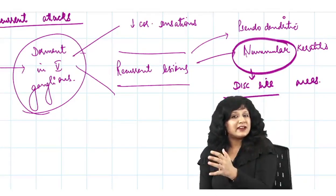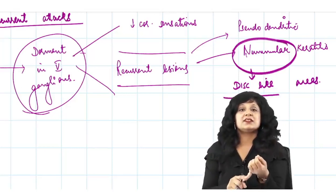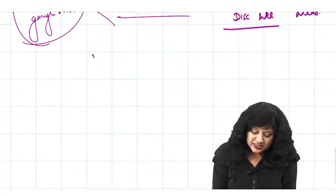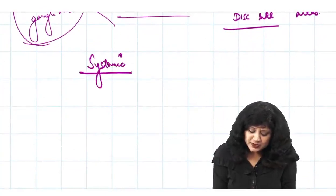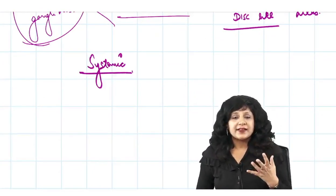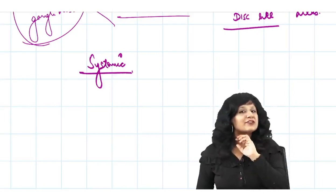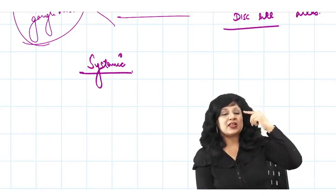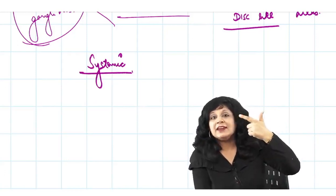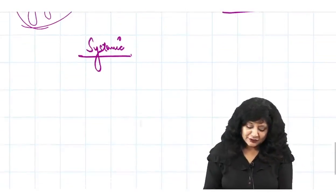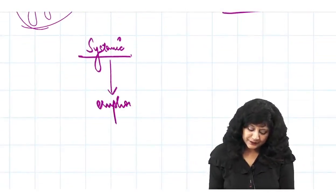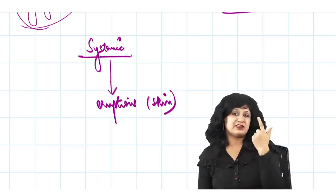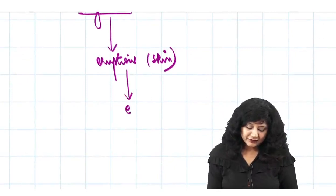In herpes zoster ophthalmicus, all three divisions of the trigeminal nerve are involved and there are systemic features. It typically starts with high-grade fever, chills and rigors, and intense trigeminal neuralgia. After 3 to 4 days, cutaneous eruptions appear on the skin with frontal involvement causing forehead rashes. In the third phase, eye involvement occurs — it is the last to appear.